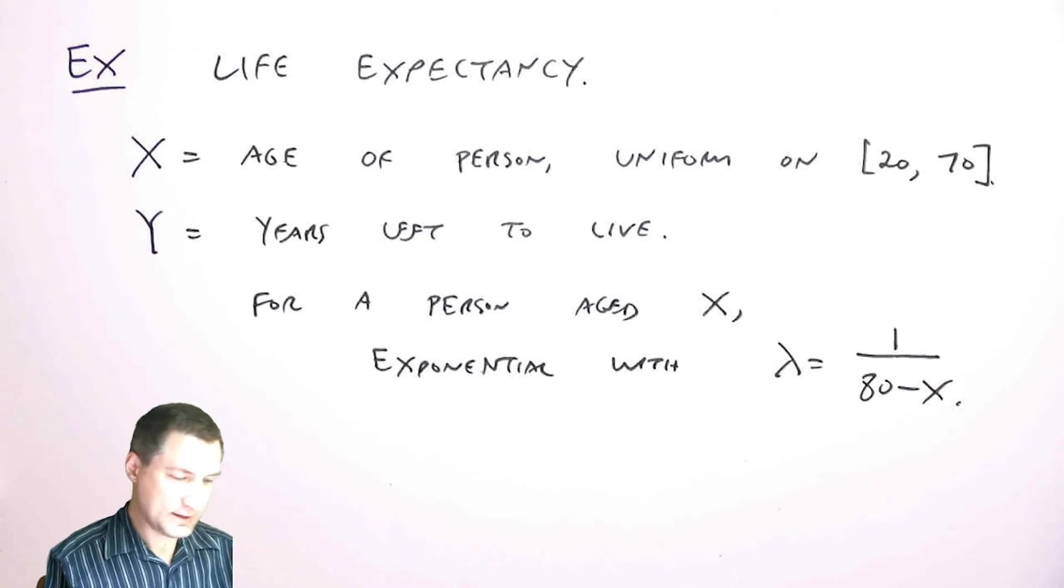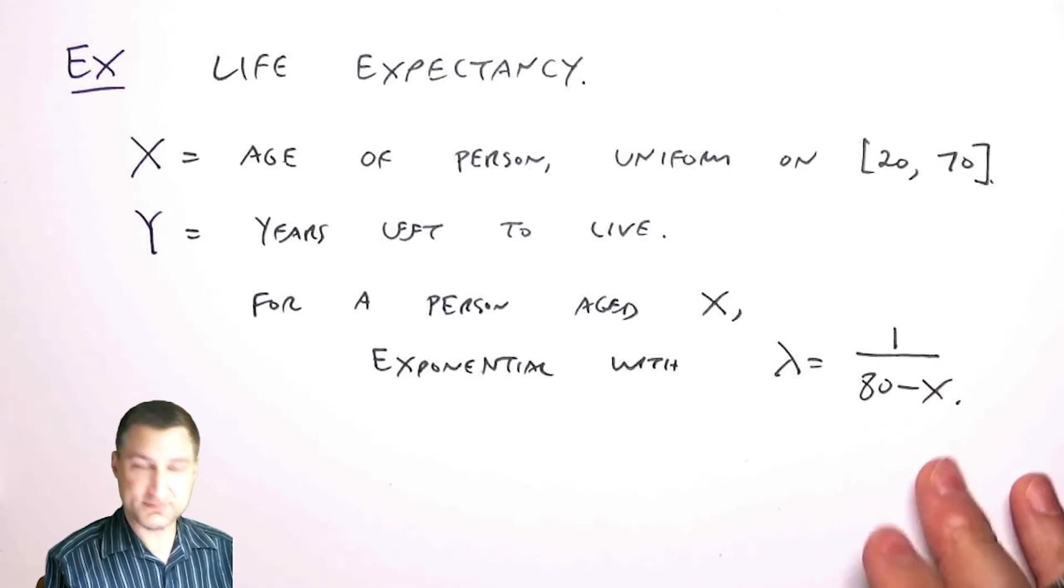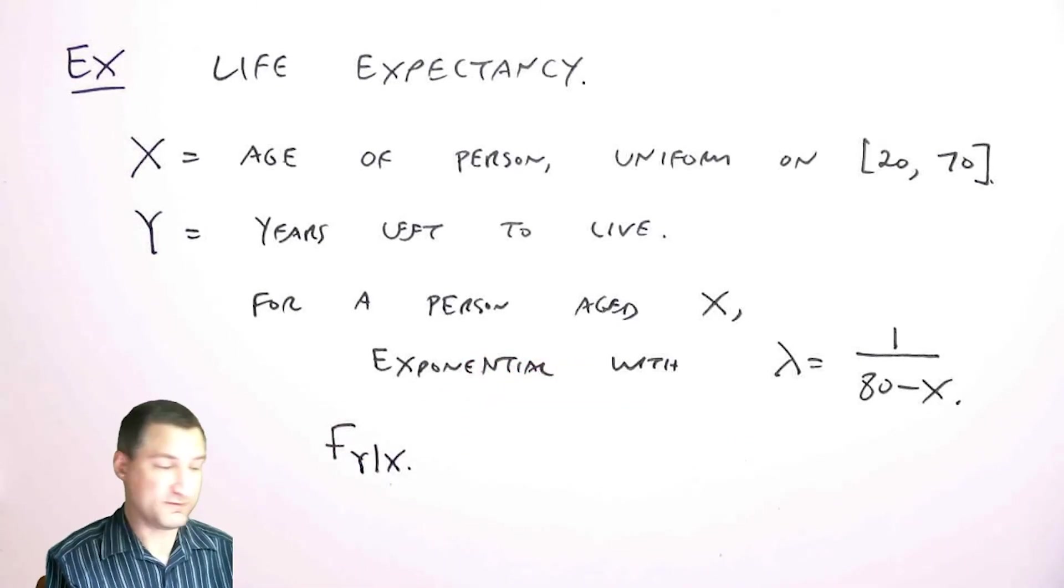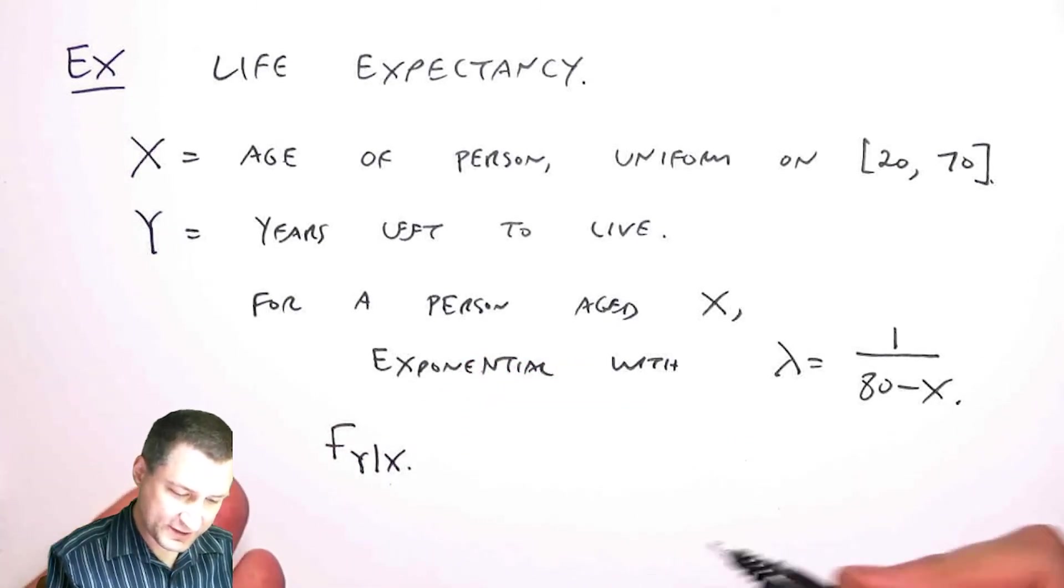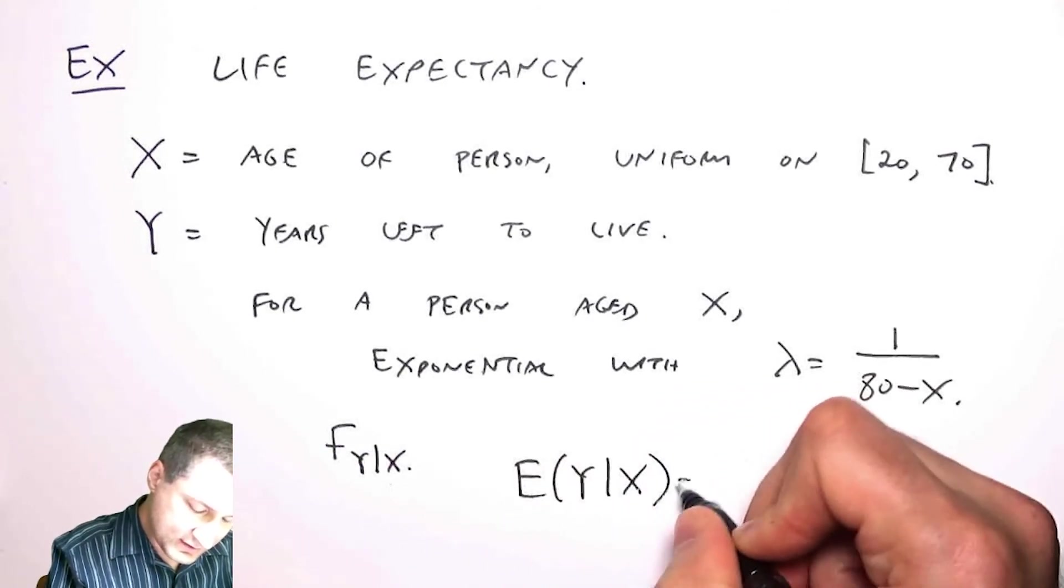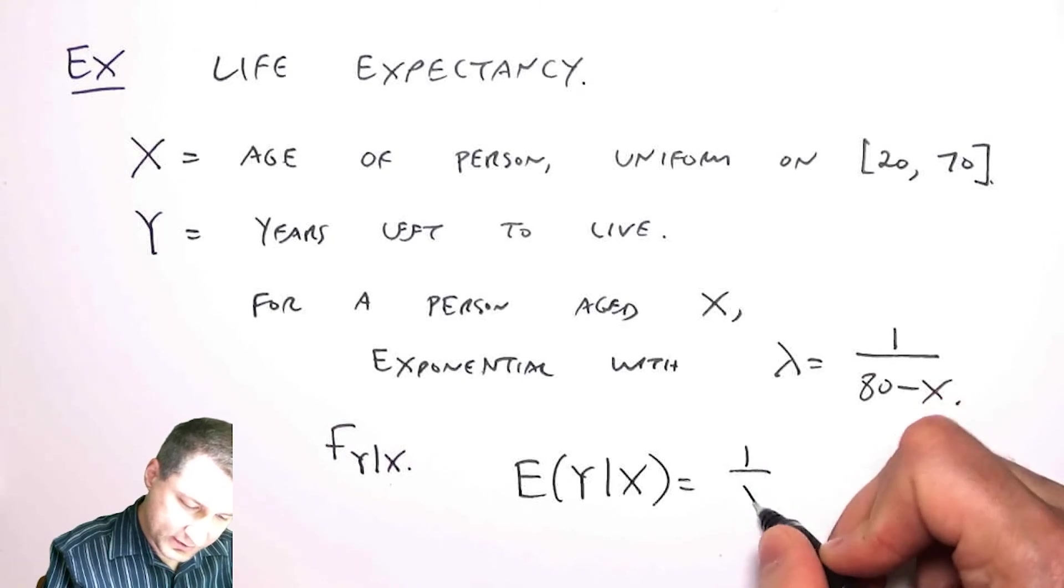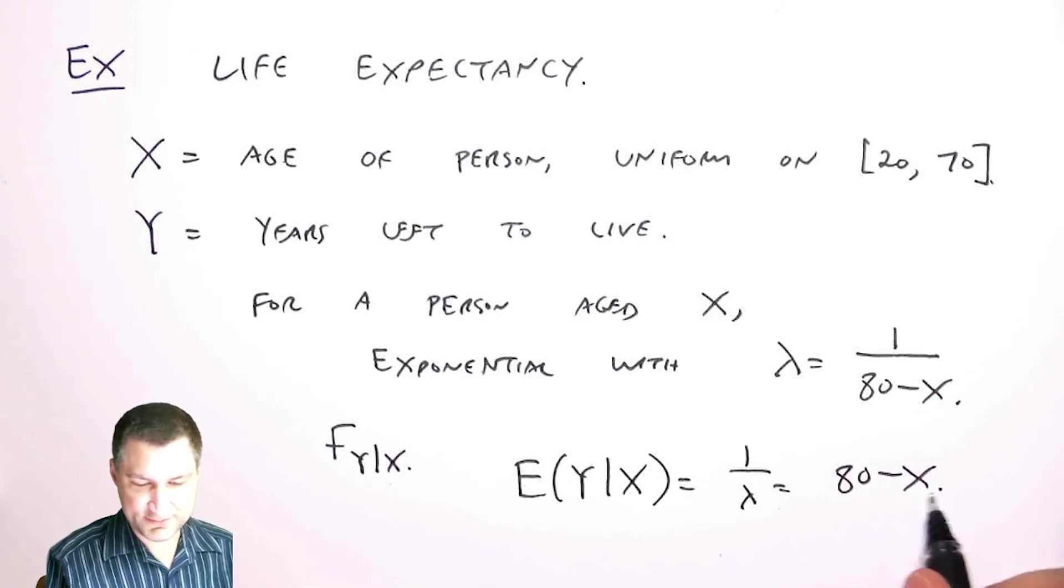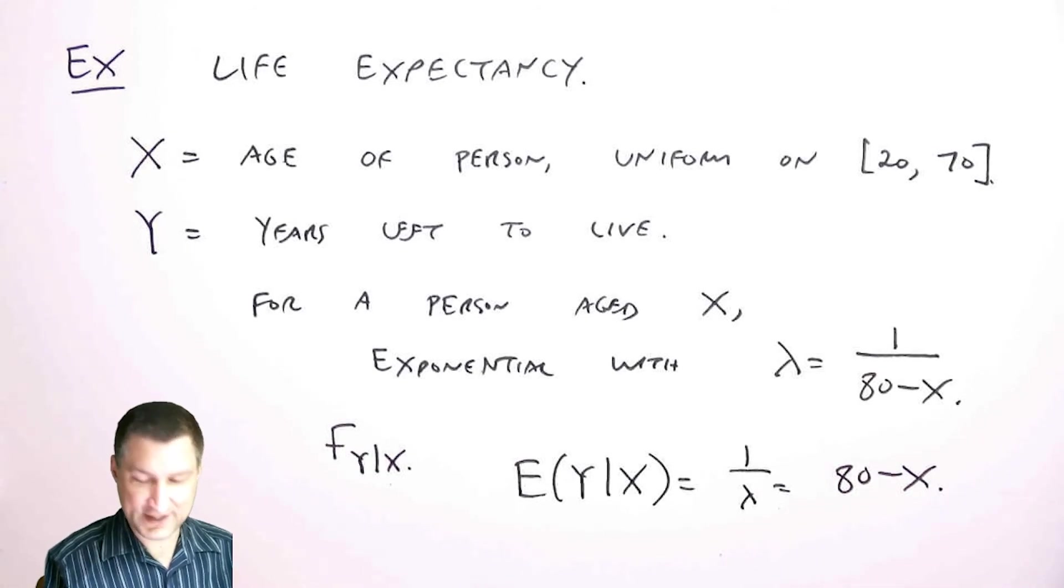Okay, so this is basically telling you the conditional f of Y given X. And so by definition, the expected value of Y given X is 1 over lambda, which is 80 minus X, right? So if you're 20 years old, your expected time left is 60, right?